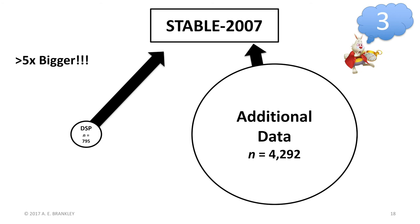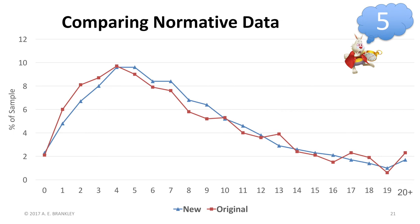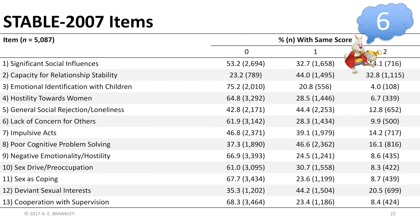So what do you as Stable users need to know about the new workbook? We have a larger normative sample. We added almost an entire cohort of adult males convicted of sexual offences in British Columbia and supervised in the community from 2005 to 2013. This is an ethnically diverse sample, and the new and old samples have comparable score distributions.